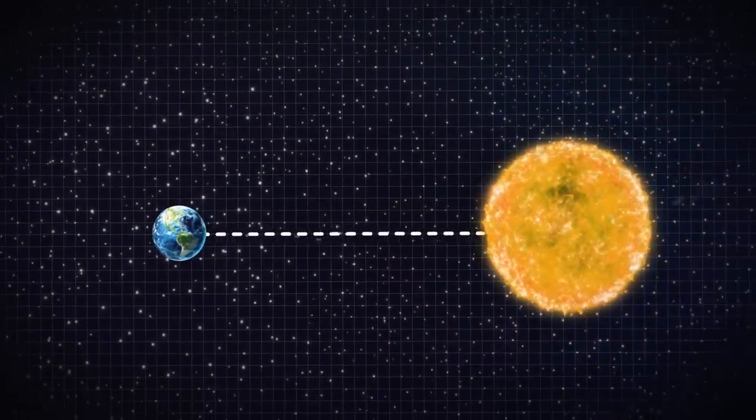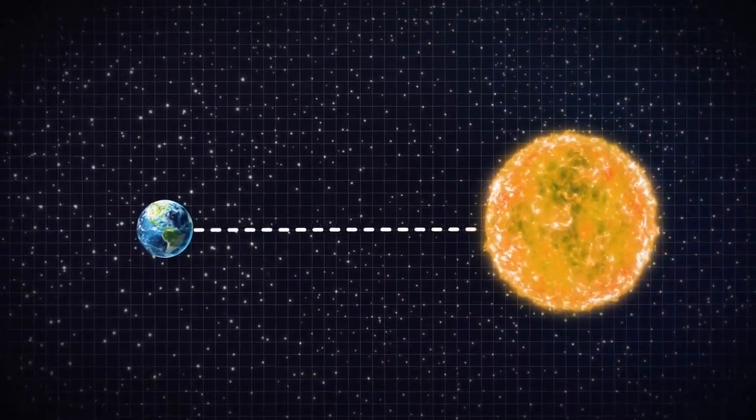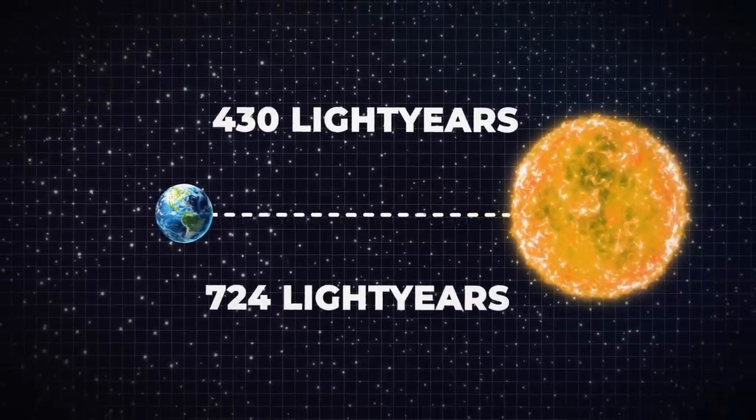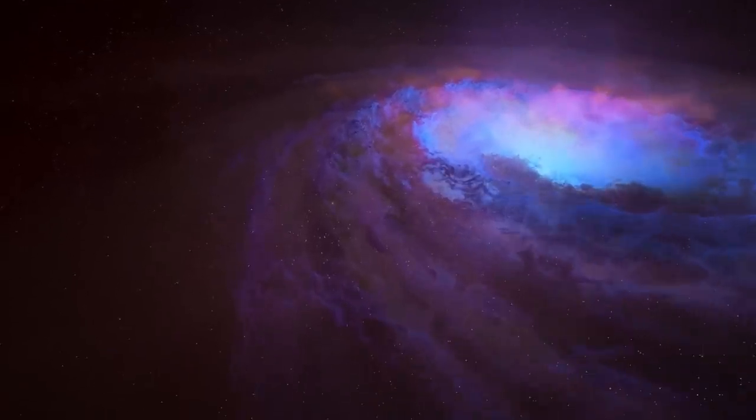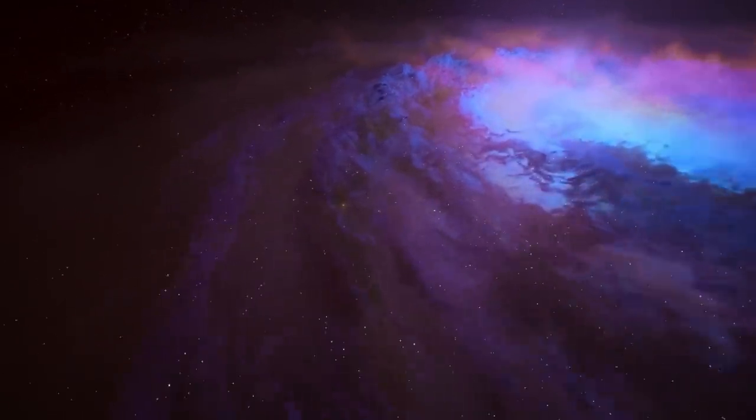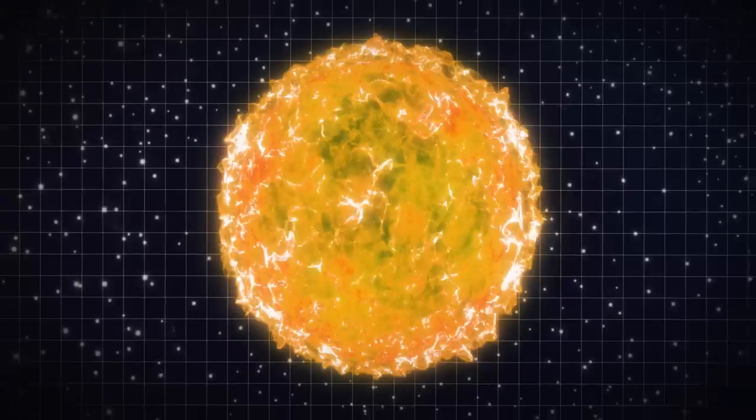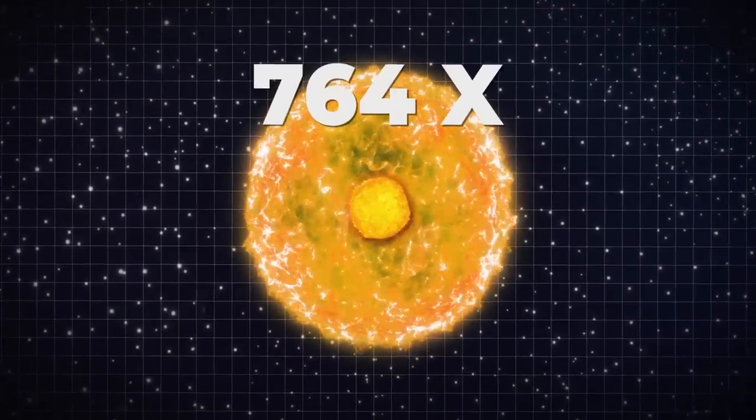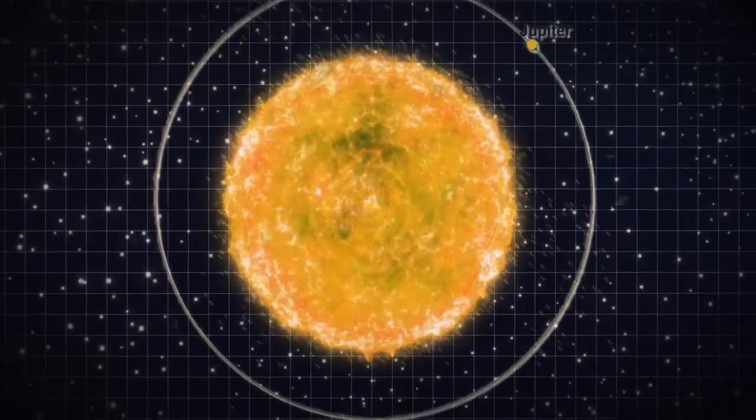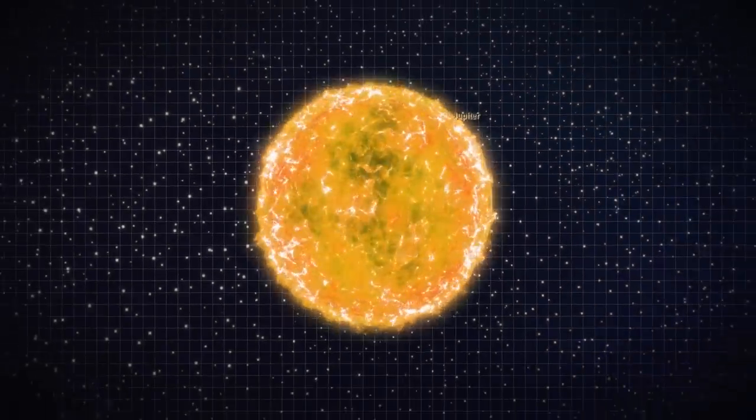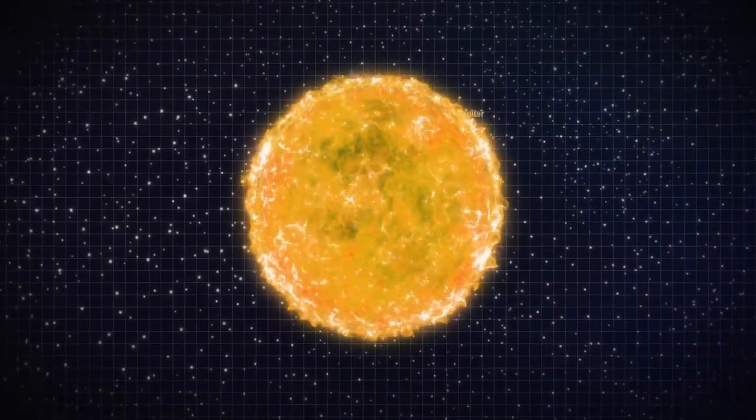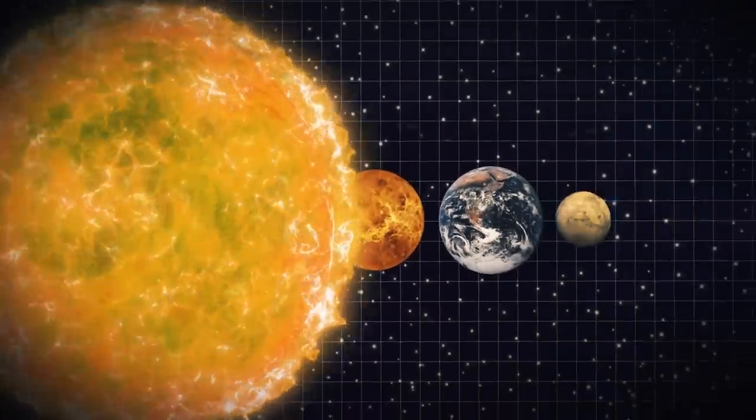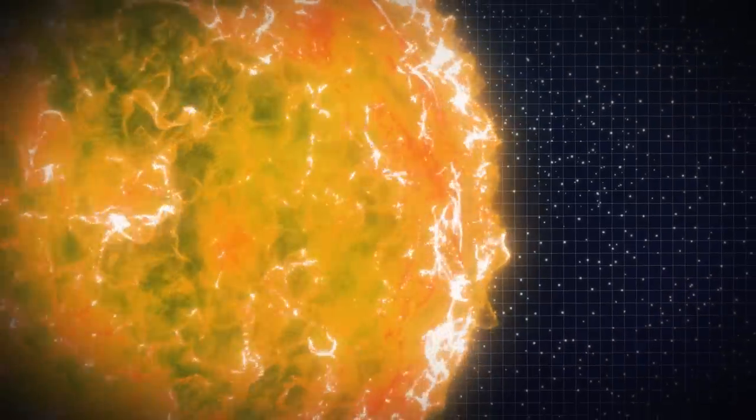Betelgeuse's actual distance from Earth is unknown, however, astronomers estimate it to be between 430 and 724 light-years away. The brightest red supergiant star, and the one that is closest to Earth, is Betelgeuse. Betelgeuse's radius is around 764 times greater than our Sun. It would extend across the asteroid belt and even beyond Jupiter if this star took the place of our Sun in the solar system. This implies the total absorption of Earth, Mars, Mercury and Venus.